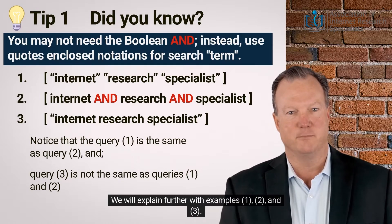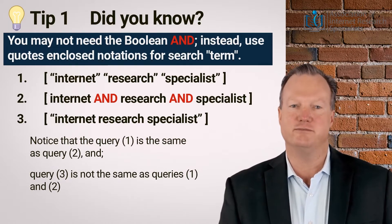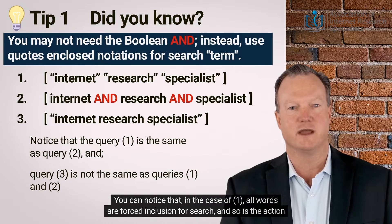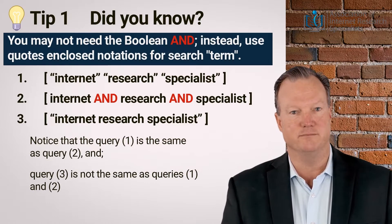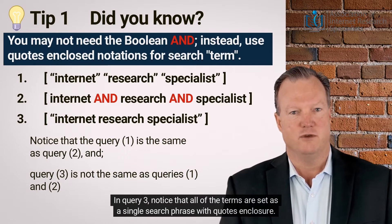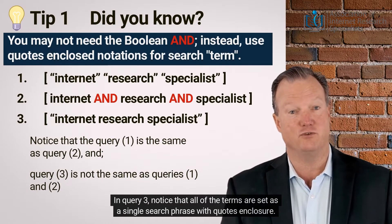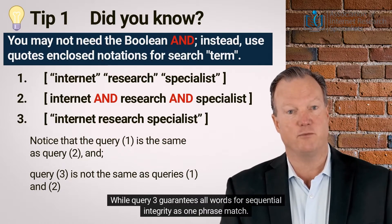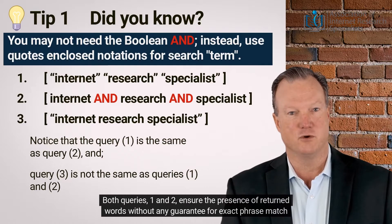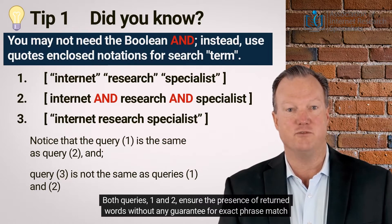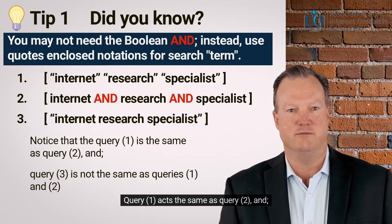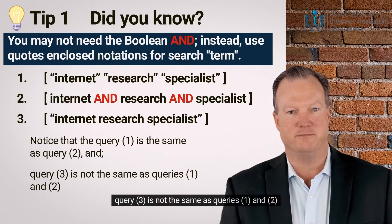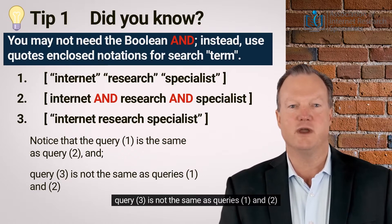We will explain further with examples 1, 2, and 3. You can notice that in the case of query 1, all words are forced inclusion for search, and so is the action of boolean AND as in query 2. In query 3, notice that all of the terms are set as a single search phrase with quotes enclosure. While query 3 guarantees all words for sequential integrity as one phrase match, both queries 1 and 2 ensure the presence of returned words without any guarantee for exact phrase match. So, query 1 acts the same as query 2, and query 3 is not the same as queries 1 and 2.